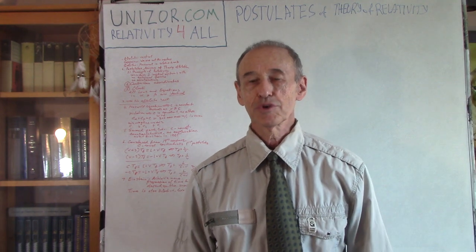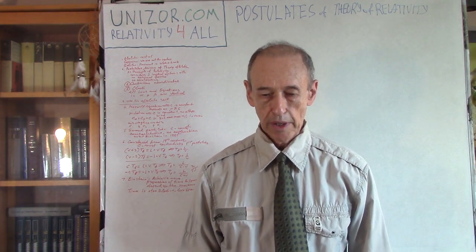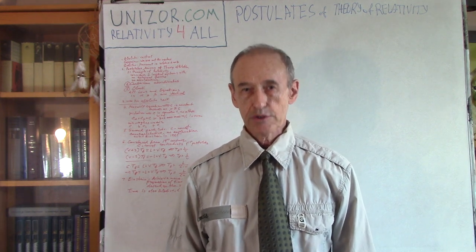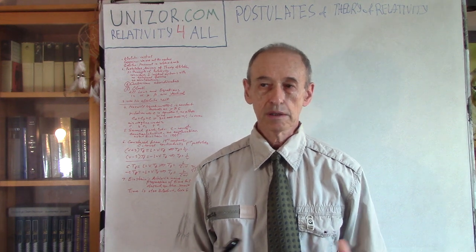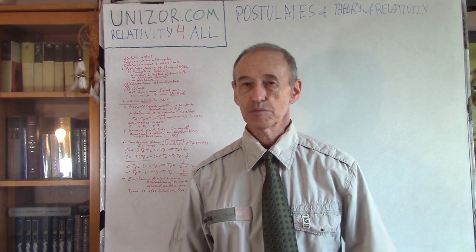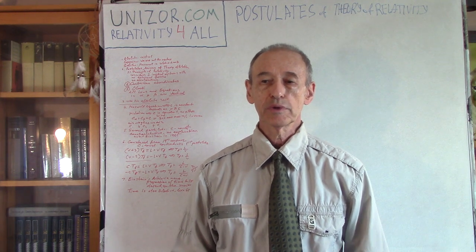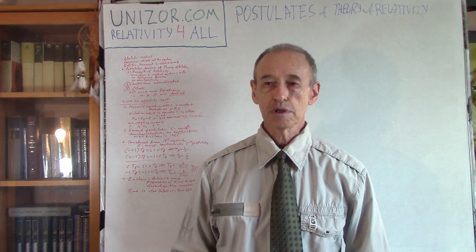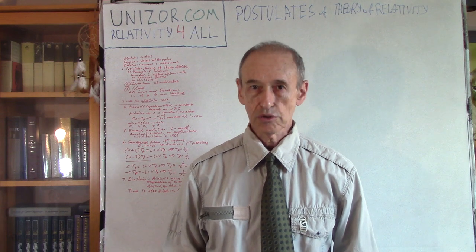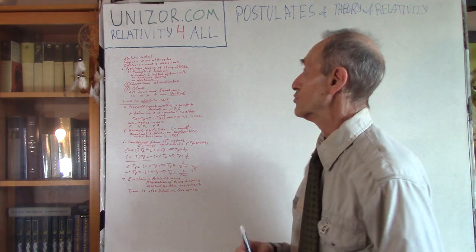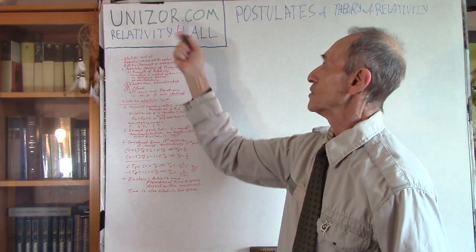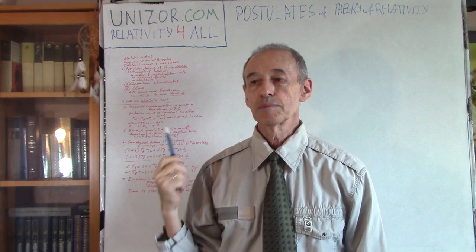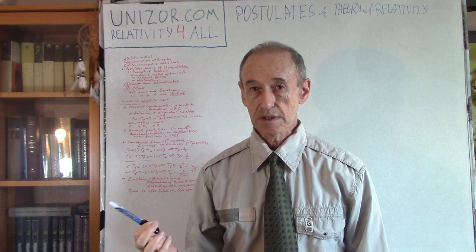Hi, I'm Zor. Welcome to Neasier Education. Today I would like to spend some time and talk about the very foundation of special theory of relativity — mainly two postulates, or axioms, which were formulated by Einstein as a preamble to his fundamental work he published in 1905. This lecture is part of the course called Relativity for All, presented on unizor.com. On the same website you will find two prerequisite courses: Math for Teens and Physics for Teens.